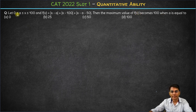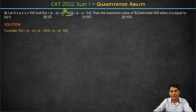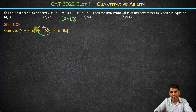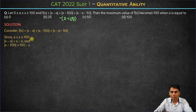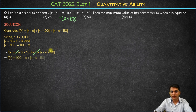Let's first simplify this expression given these conditions. Since x is greater than or equal to a, |x - a| can be written simply as x - a. Since x is less than 100, |x - 100| becomes 100 - x. We don't know the value of a, so we keep the last term as is. So f(x) becomes x - a + 100 - x + |x - a - 50|. The x terms cancel, giving us 100 - a + |x - a - 50|.